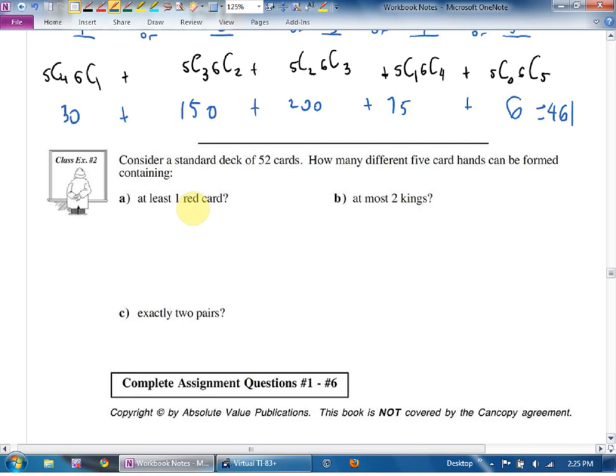I am going to do B. At most two kings. Okay. Here's my bucket. Kings and others. How many kings are there in the deck? Four. How many others? Forty-eight. At most two kings means what cases? Two. Or. One. Or. Zero. Sorry, I have no shortcut for cases. It's just you got to do them each individually.